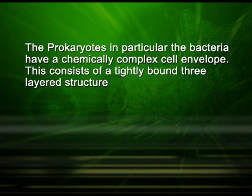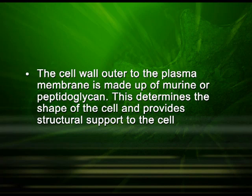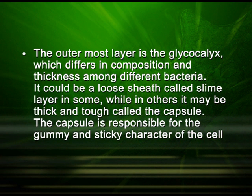Bacteria in particular have a chemically complex cell envelope consisting of a tightly bound three-layered structure. The innermost layer is the plasma membrane, which is semi-permeable and similar in structure to that of eukaryotes. The cell wall, outer to the plasma membrane, is made up of murine or peptidoglycan, which determines the shape of the cell and provides structural support. The outermost layer is the glycocalyx, which differs in composition and thickness amongst different bacteria. It could be a loose sheath called the slime layer in some, while in others it may be thick and tough — here it is called the capsule. The capsule is responsible for the gummy and sticky character of the cell.